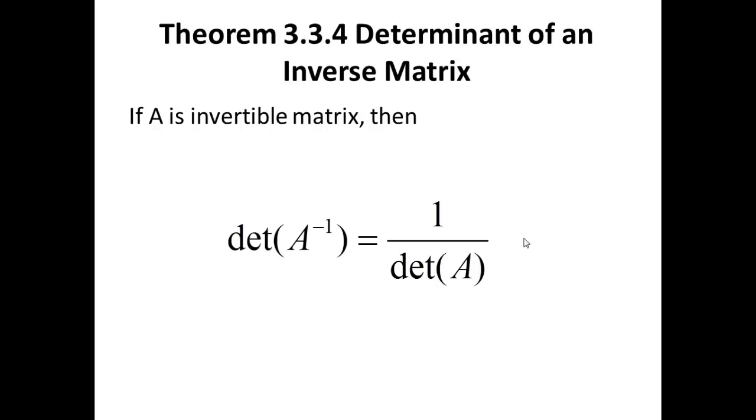The fourth theorem 3.3.4, Determinant of an Inverse Matrix. If A is an Invertible Matrix, i.e. Non-Singular Matrix, a matrix that has an inverse, then the determinant of the inverse of A equals 1 divided by the determinant of A. And do not forget that the determinant of A is a scalar, it's a real number, and it cannot be zero because A inverse exists. That is important because you cannot divide by zero.